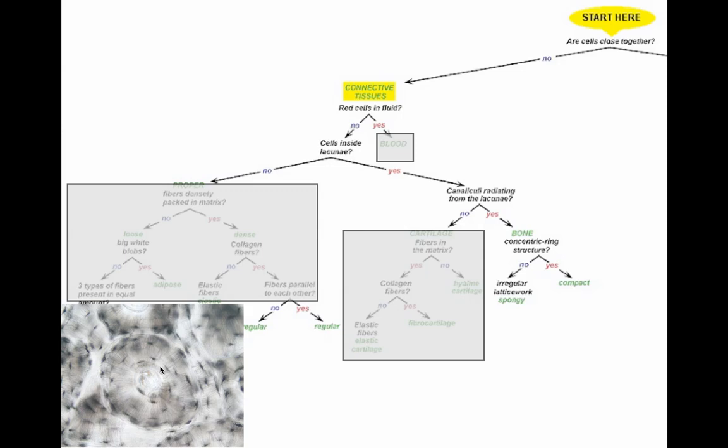We know we're looking at bone. Do you see a concentric ring structure? Boy, I hope you do. The answer to that is certainly yes. We are looking at compact bone. This, by the way, is one of the most distinctive types of tissue. So I consider this a pretty easy one. And once you see it a couple of times, I don't think you're going to have a problem with it. But I'm basically just illustrating how this tree works.